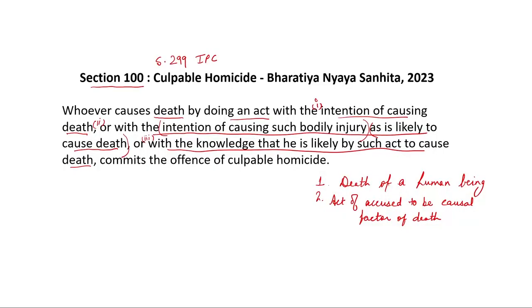For clause 2 of section 299, there are two parts. One, the injury should be an intended injury. And second, the injury should be such as the doctors testify to be an injury that is likely to cause death. Coming to the third clause — when does an act amount to culpable homicide? When the act which results in death of the deceased person was done with knowledge. Here we are not talking about intention to cause death, nor intention to inflict a bodily injury that is likely to cause death. Knowledge is something which can exist irrespective of intention.